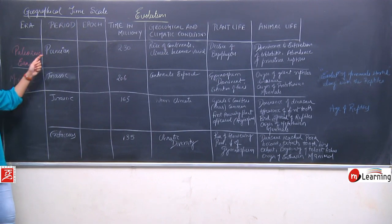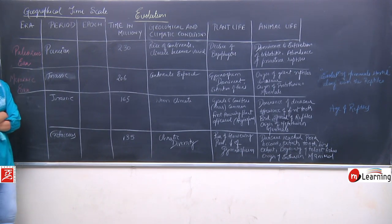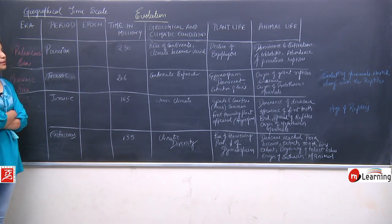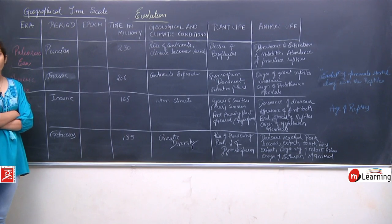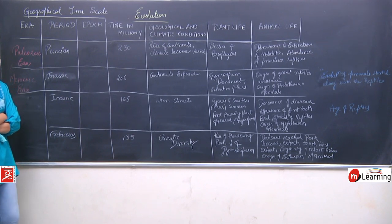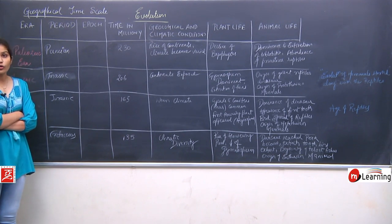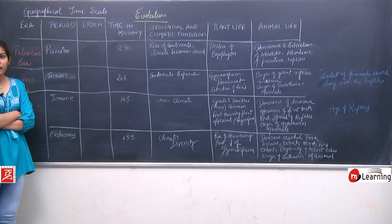So, to summarize: the Permian period, the last period of the Paleozoic era, was around 230 million years ago. Bryophytes declined, there was dominance and extinction of trilobites, and abundance of primitive reptiles. In the Carboniferous period, reptiles arose; now in the Permian period, they increased their numbers and became somewhat dominant.